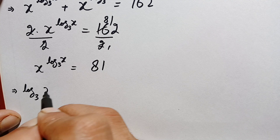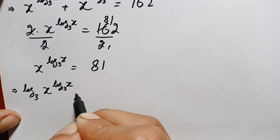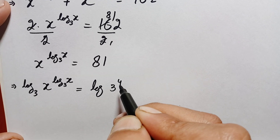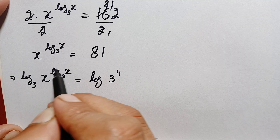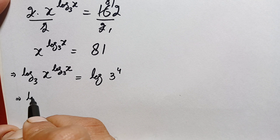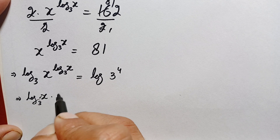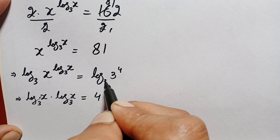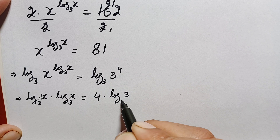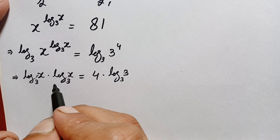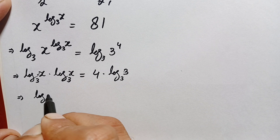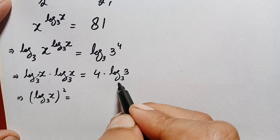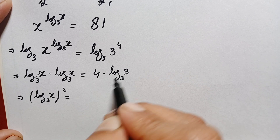Now taking log base 3 of both sides and moving the power to the front, the left hand side becomes log of x with base 3, times log of x with base 3, equal to log of 81. We write 81 as 3 to the power 4, so the right side becomes 4 times log of 3 with base 3. Since log of any number with the same base equals 1, this gives log₃x whole squared equals 4.